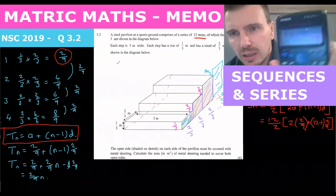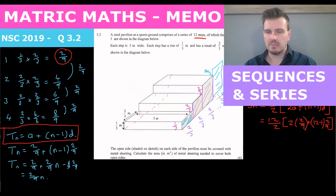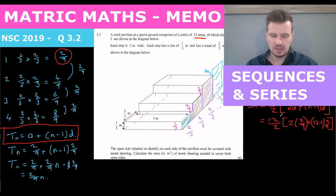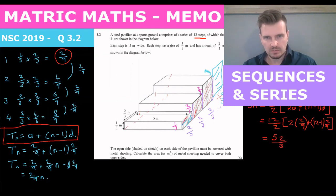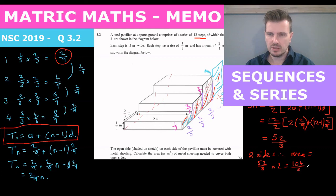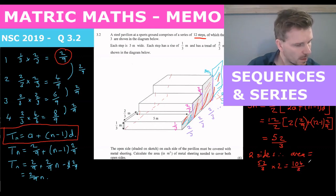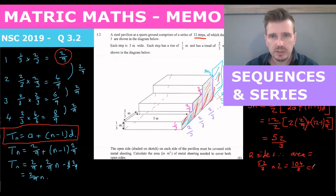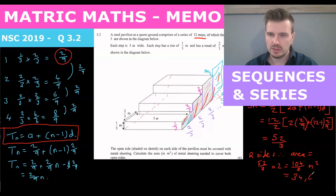So we put it in our calculator: that'll be six multiplied by four over nine plus eleven times two over nine, and we should get 52 over three. So that's the area of this full side. But remember, there are two sides, so: area equals 52 over three times two, which equals 104 over three, which is 34.67 meters squared.